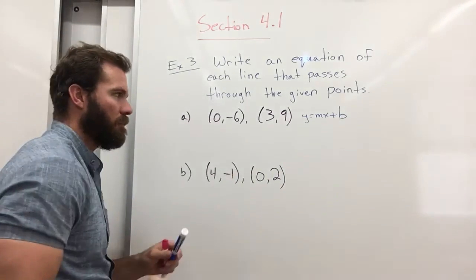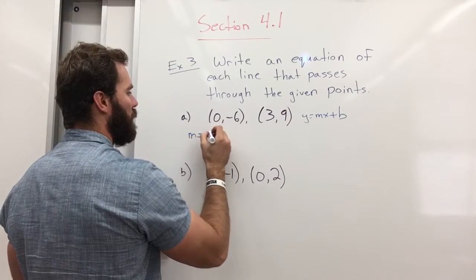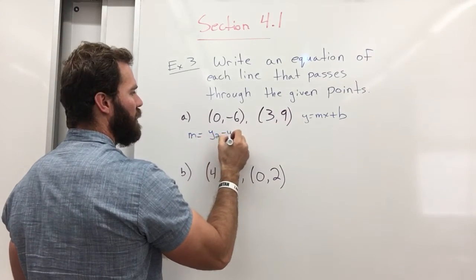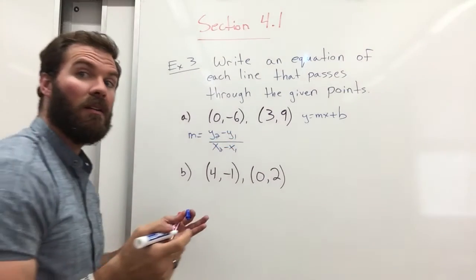Now we have two points. To find our slope, we're going to use the slope formula, which is y2 minus y1 over x2 minus x1. You should memorize that one. You're going to need it a lot.